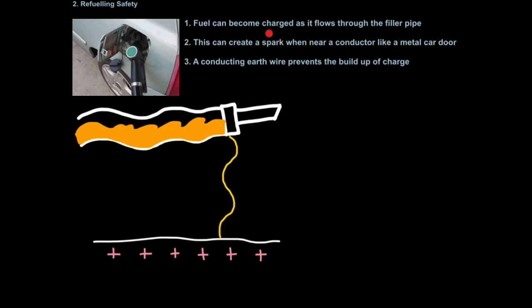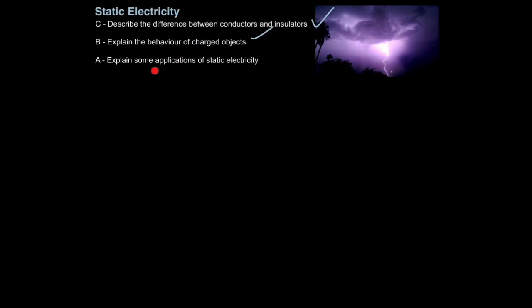So just to recap, fuel can become charged as it flows through the filler pipe. This can create a spark when near a conductor like a metal car door. A conducting earth wire prevents the build up of charge and therefore a lethal explosion. So that is how you explain some applications of static electricity.